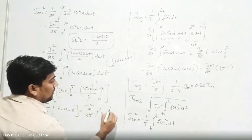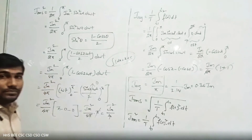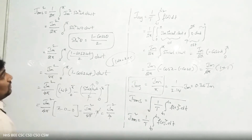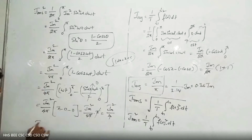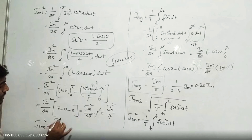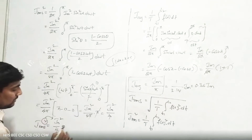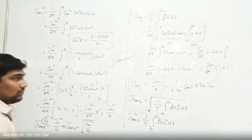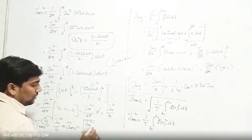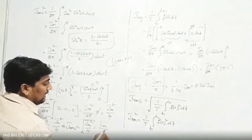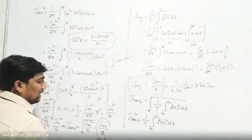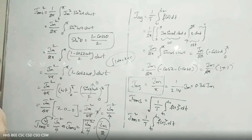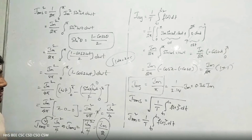The π terms cancel, giving I_rms² = Im² / 4. Taking the square root of both sides, I_rms = √(Im² / 4) = Im / 2. This is the final answer for I_rms of a half-wave rectifier. So to summarize: I_average = Im / π and I_rms = Im / 2.